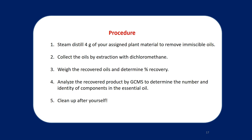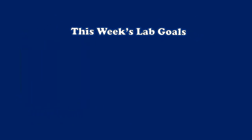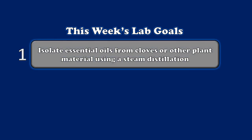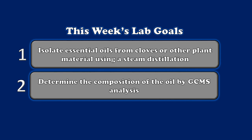Finally, we'll clean the lab up and we'll be done for the week. In summary, the goals for this week's lab are twofold: one, to isolate essential oils from cloves or a similar plant material using a steam distillation; and two, to determine the composition of that oil using a GCMS analysis. We'll see you on Monday for your recitation where we'll discuss more about how we're going to accomplish this in the lab.